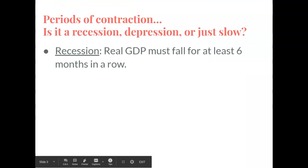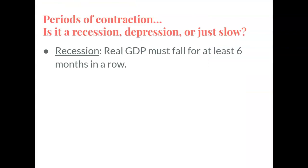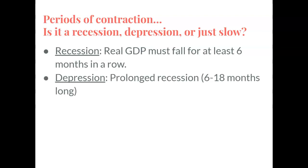So is it a recession, a depression, or just slow when we're in a period of contraction? A recession means that the real GDP has fallen for at least six months in a row. If it goes longer than that — a prolonged recession, six to 18 months long — then we have entered into what's called a depression.